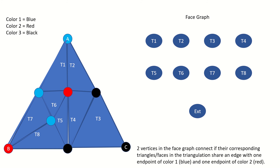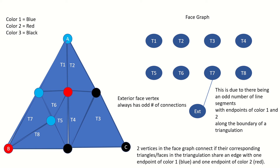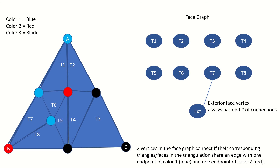Think about the vertex corresponding to the external face of our graph. How many connections will it have? In this case, it's one, due to the line segment that the exterior face shares with triangle T7. But in all cases, it will be an odd number of connections. This is because there are always an odd number of edges on the boundary of any triangulation of a triangle with one endpoint of color 1 and one endpoint of color 2. And all such edges occur along the original triangle edge with endpoints of color 1 and 2. In this case, that would be along edge AB of our original triangle.